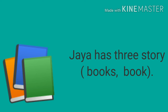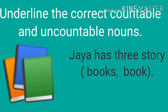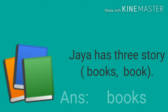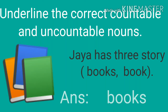'Jaya has three story books or book?' Book is a countable noun — we can count: one book, two books, three books, five books, ten books. So Jaya has three story books. Books is the correct answer: one book, three books, four books, ten books.